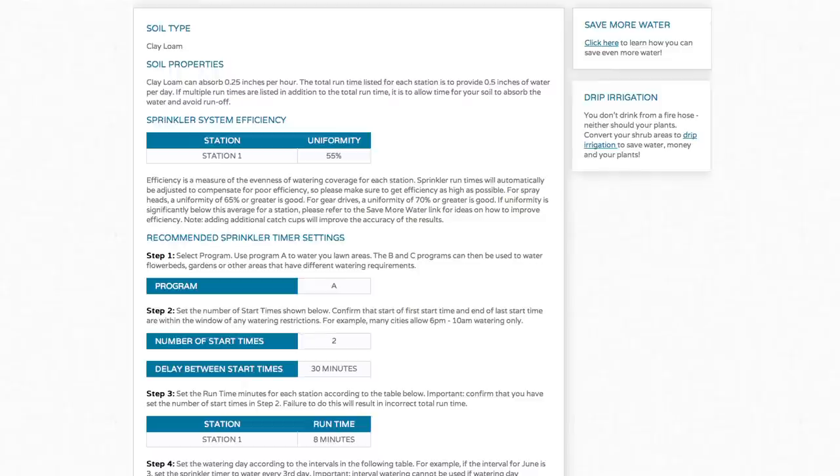In step three, you'll see the run time for the stations that you've entered. In this example, we just have one station and a recommended run time of eight minutes. The total recommended run time with two start times and an eight minute run time is 16 minutes per watering day.